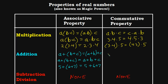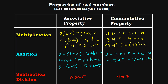Associative property means you can regroup things that are multiplied together any way you want and you'll get the same product. Commutative property says you can move around all the factors in a product and still get the same product — or rearrange terms in a sum and still get the same sum. Try 4 + 7 + 9 versus 7 + 4 + 9 and verify the sums are the same.